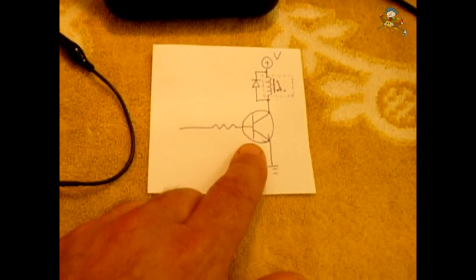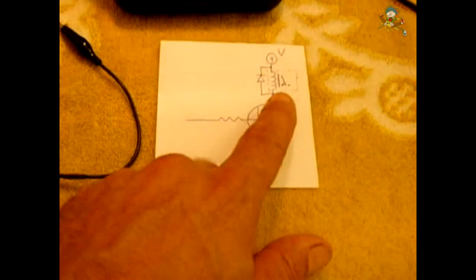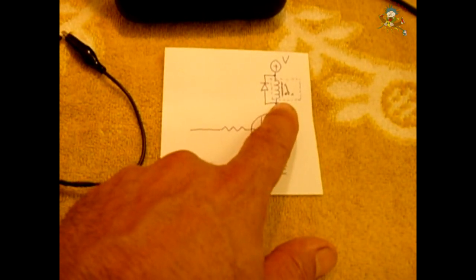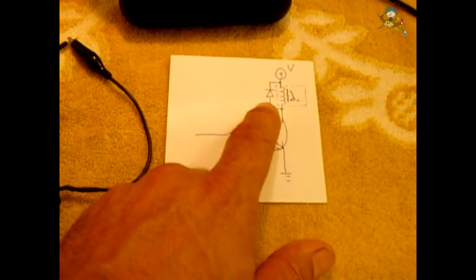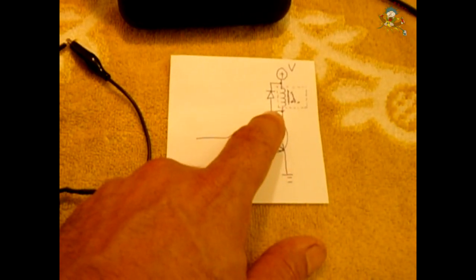Generally you will see a relay coil like you see here and in parallel with the relay coil you will find a diode hooked up reverse biased. That's there to protect against the collapsing magnetic field once power is removed from this relay.